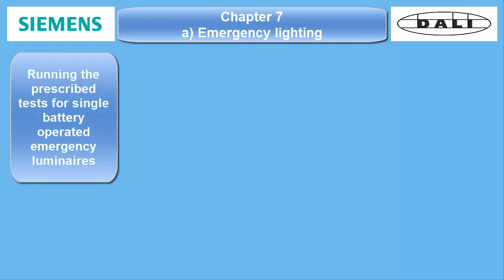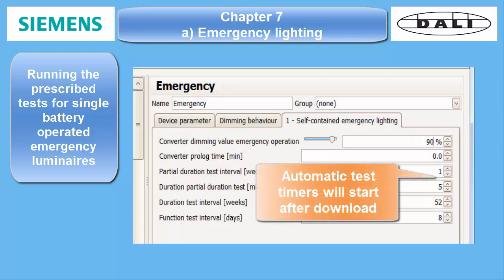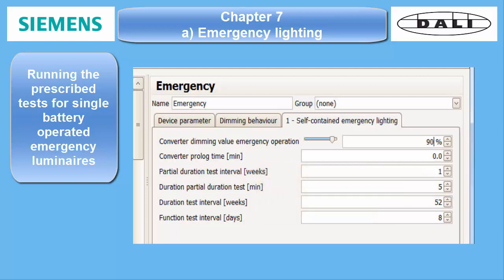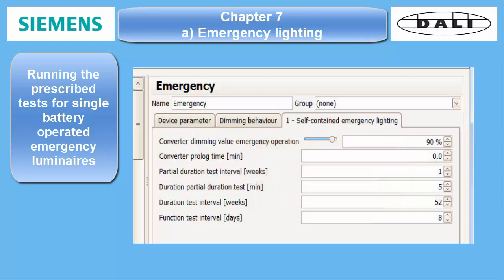3. Running the prescribed recurrent checks. The settings for the checks must be made individually for each ballast of type 1. As such ballasts also have an internal counter which will be set by the DALI gateway, they will start the timers for the checks right after download. The automatic check runs will be carried out according to the parameter settings, run at random on the calculated days, and especially the endurance tests are staggered so as not to run all at the same time, which could cause severe problems in case of a real emergency.